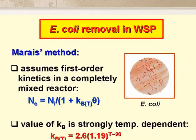We normally design maturation ponds for E. coli removal, although of course we might in any one case want to design them for something else — nitrogen removal, for instance. We use the design method developed by the late Professor Marais.